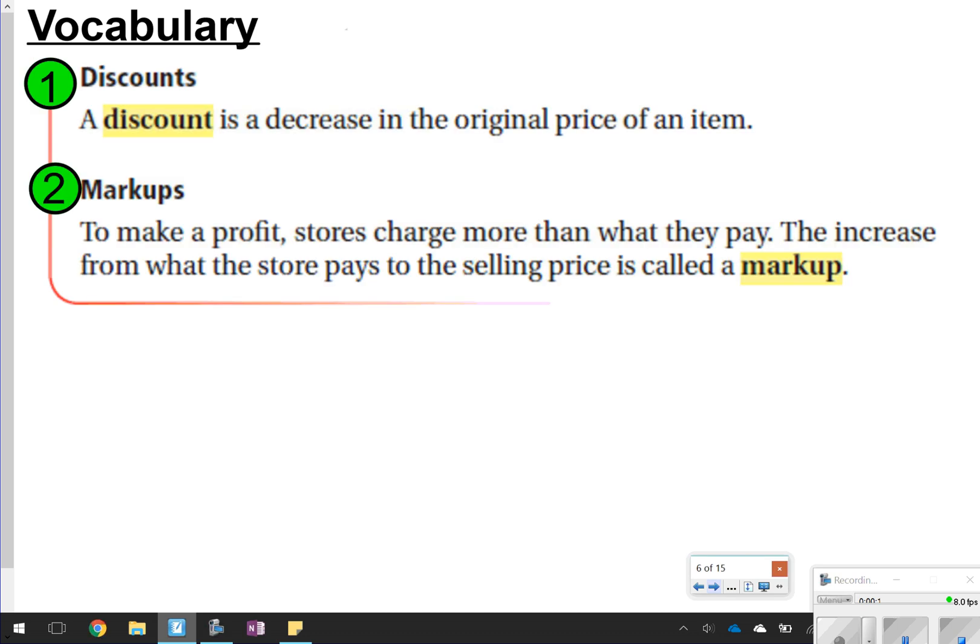The first two things we're going to write down are the basic vocabulary terms of a discount and a markup. A discount is basically when you decrease the original price of an item, and a markup is when they increase the price of an item to make a profit in the store. Go ahead and take the time now to pause the video. Once you're done, click play so we can try a few questions.